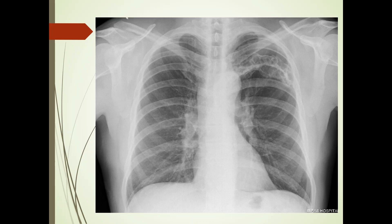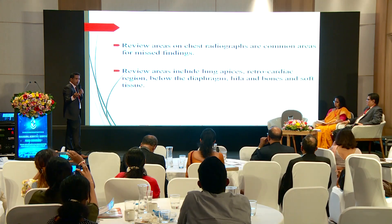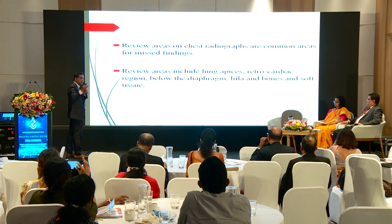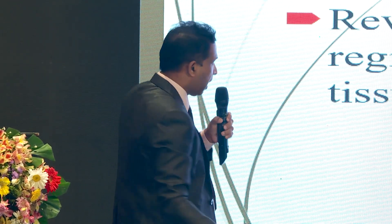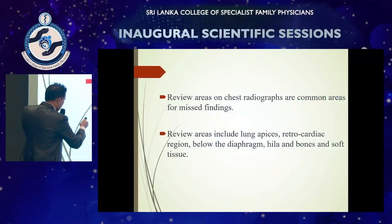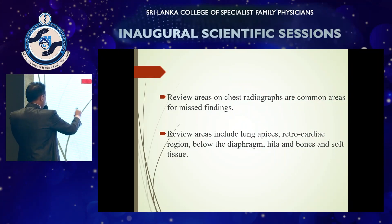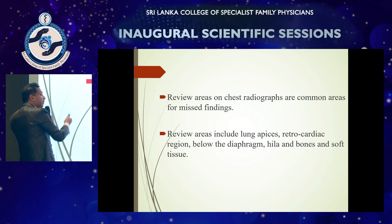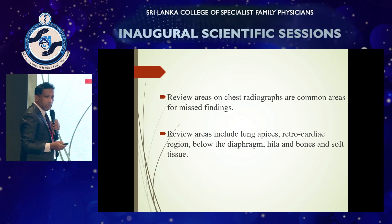In summary for chest X-ray: look at the lung fields, but when it appears normal, carefully check the lung apices, retrocardiac region, below the diaphragm, hila, and all bones and soft tissue — because these are the most commonly missed areas. Only then should we refer for further imaging.